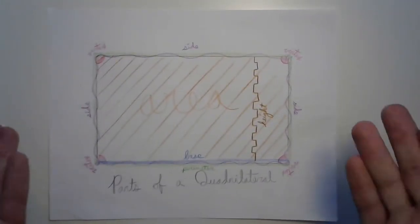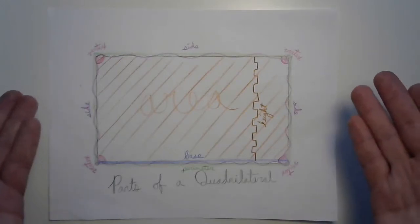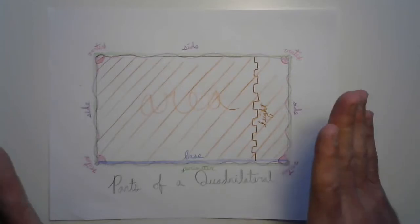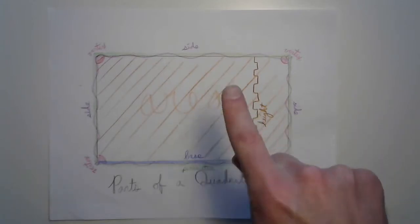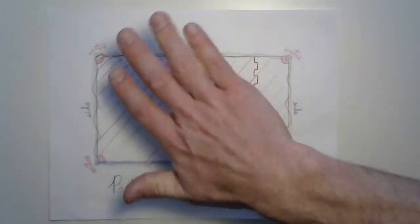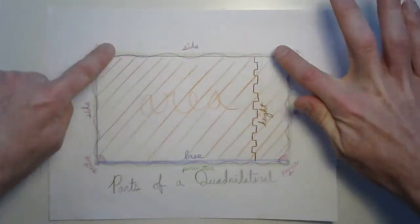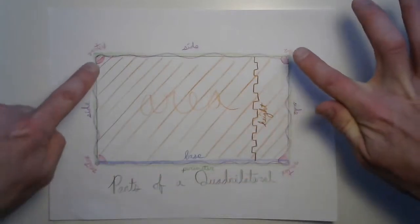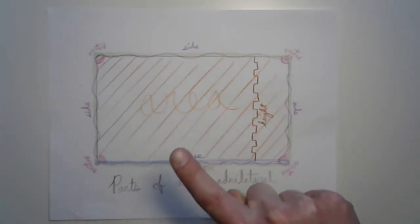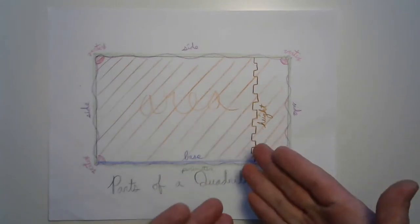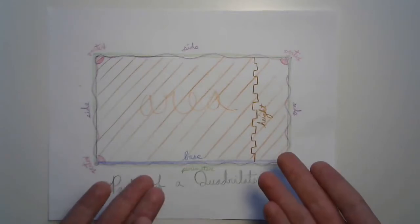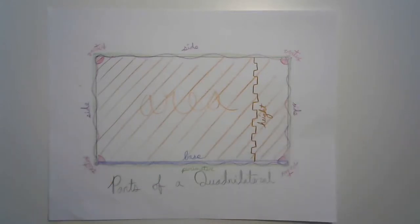This is a diagram of the parts of a quadrilateral, of which a rectangle is a member. There are three things I really want you to notice: first, how the area takes up everything inside those sides; second, this very special side on the bottom, the base; and third, we can find height in a rectangle as well just by measuring. Keep those in mind as I show you this next trick.